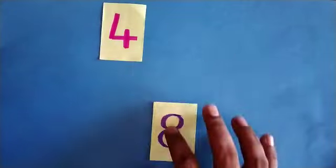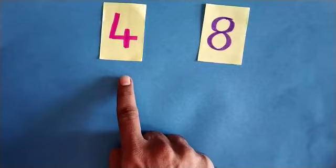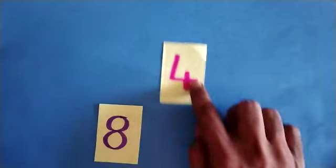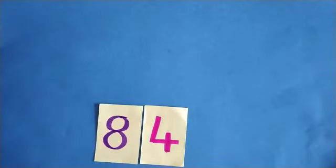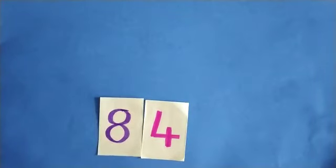One more number we can make. Now don't take 4 in the beginning. Now take 8 and then take the 4. Now you got your number and this number is 84. 84 means what? Here we have 8 tens and 4 units. So this is 84.